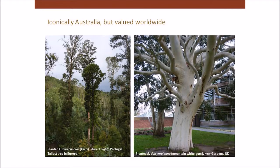They grow well in fairly cold areas like the United Kingdom. The picture on the left is actually the tallest tree in Europe — it's a eucalyptus diversicolor, a karri that I measured at 72 metres tall in Portugal. The tallest tree in Africa is also a eucalypt. The tallest tree in North America, excluding the conifers, is also a eucalypt. They're a bit like weeds overseas — we've given the rest of the world eucalypts, and they can become a bit weedy in other places.